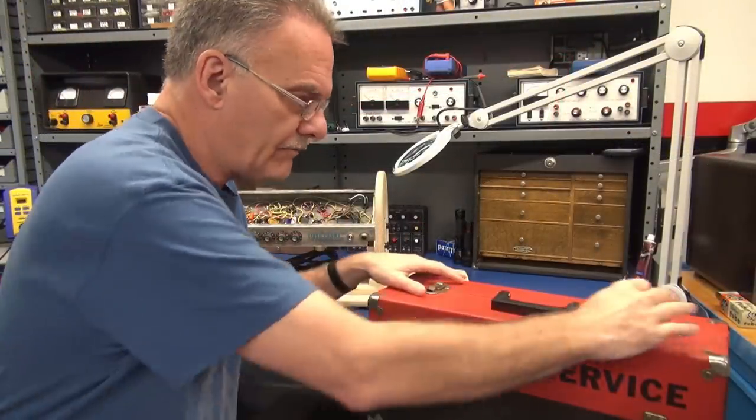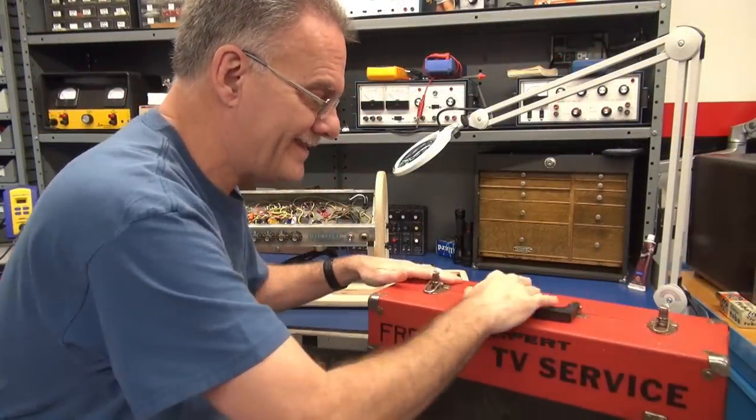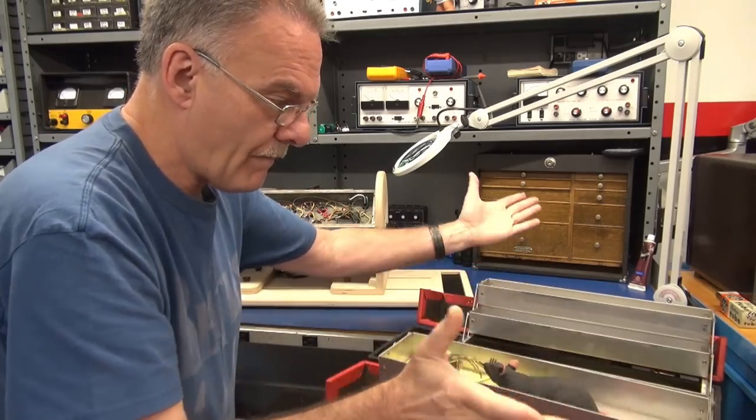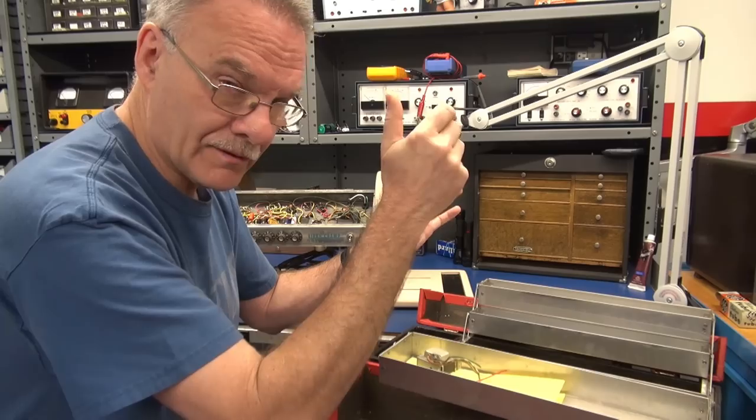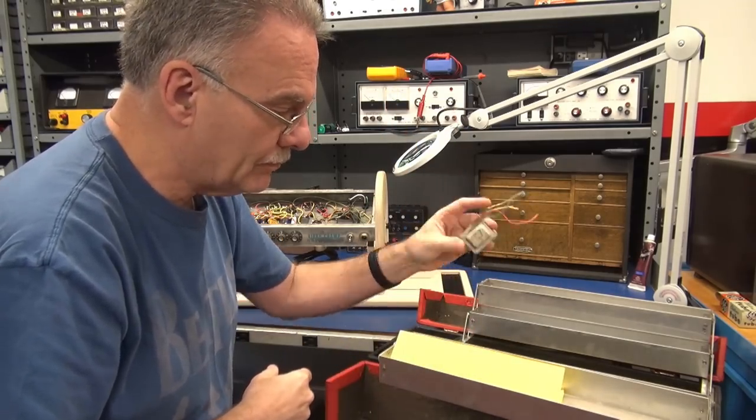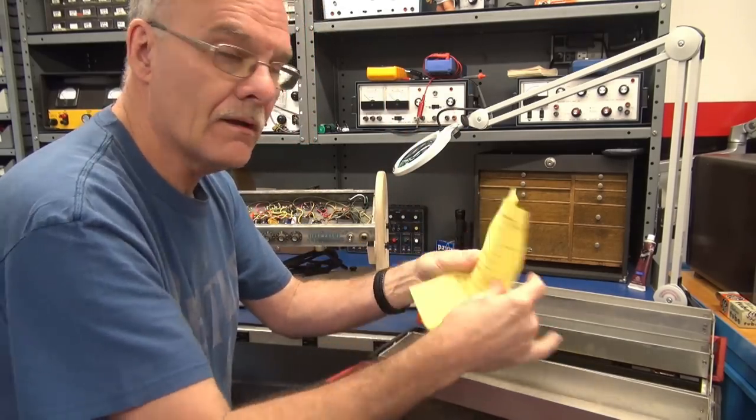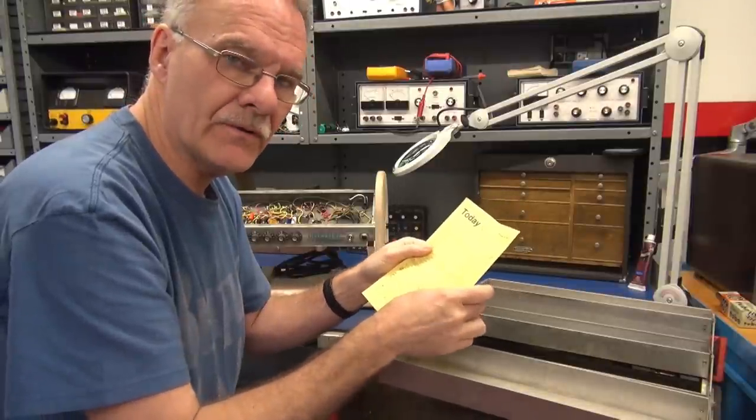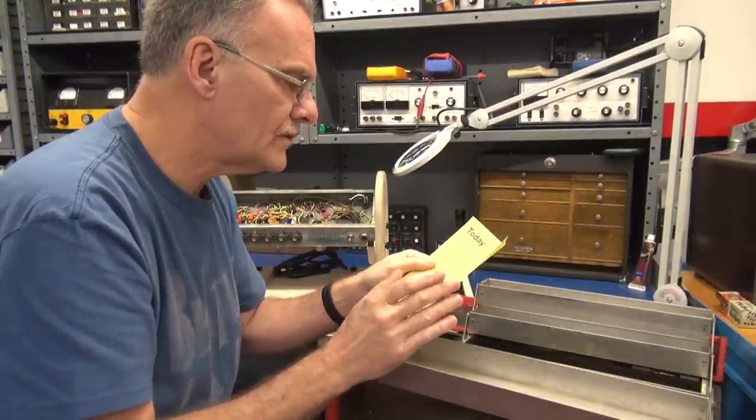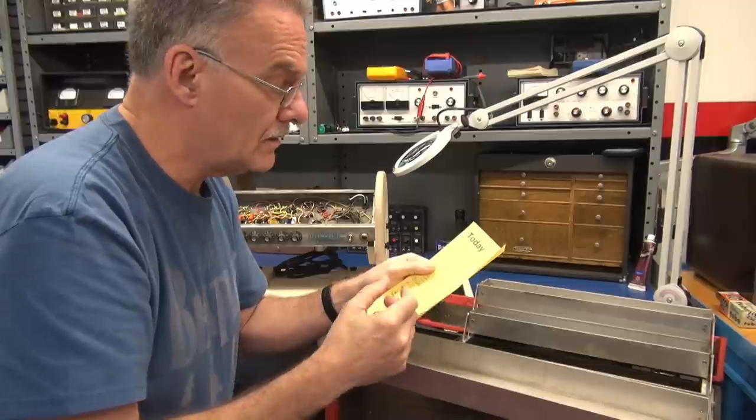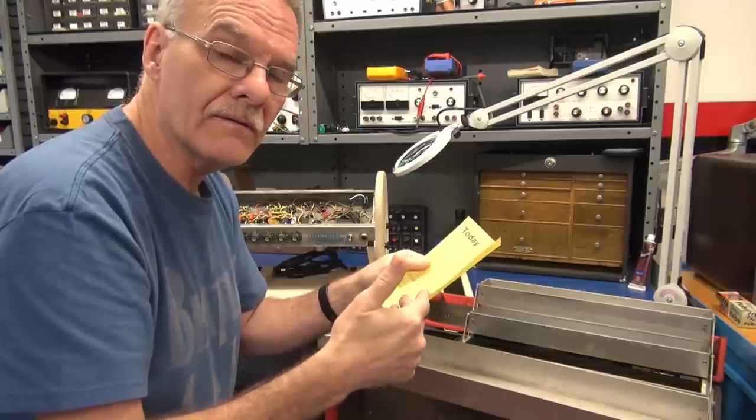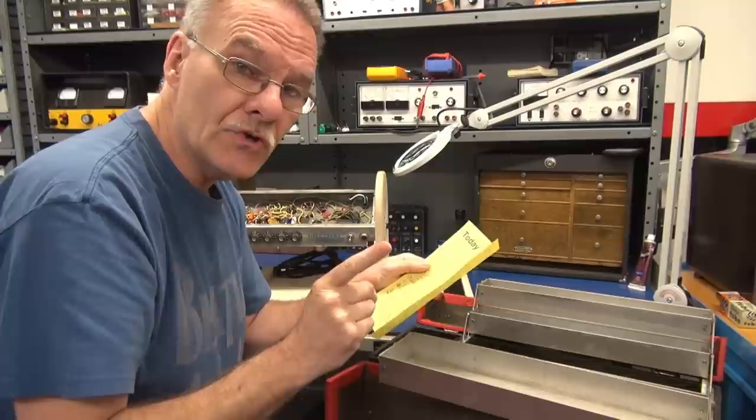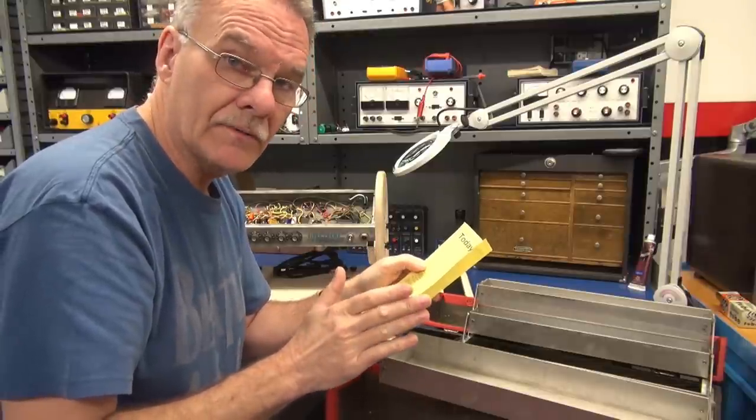Alright Fred, what have you lined up for today's D-Lab basic training? Today we have a silver face Fender Vibro Champ with a symptom of low power output. As I go through this amplifier, here are three things it could be: is it a bad tube, is it a ground problem, or is it a power supply issue?